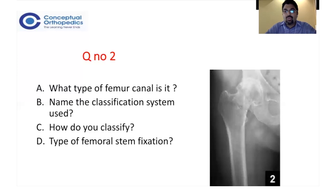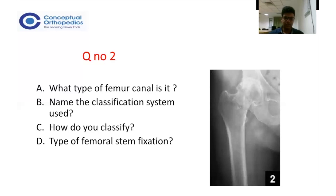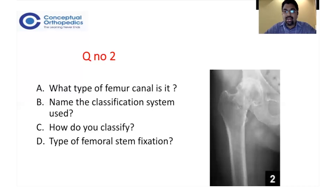In this case with an arthritic hip and an osteoporotic femoral stem, we'll proceed to total hip arthroplasty. Depending on the quality of the femoral stem, we decide on the type of femoral component and fixation. The questions raised are: what are the types of canal classification systems and types of fixation?